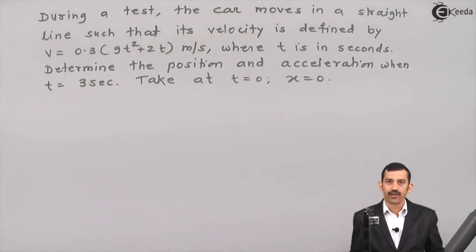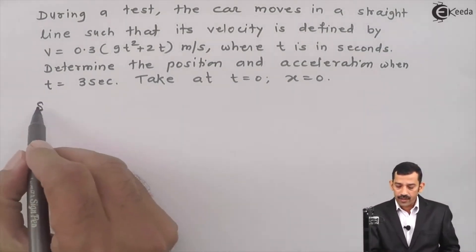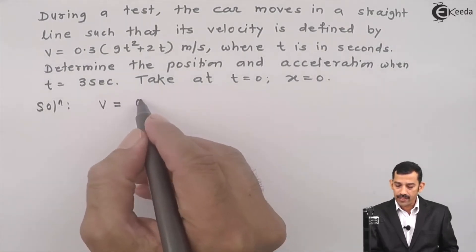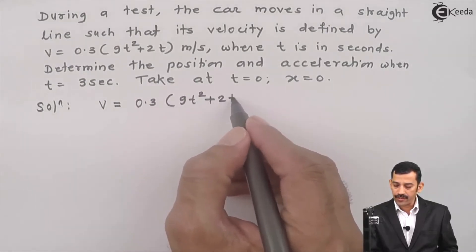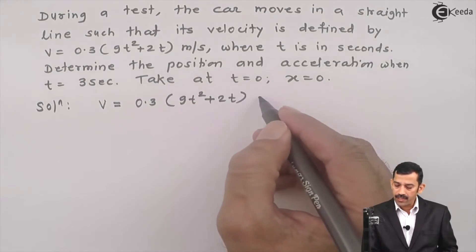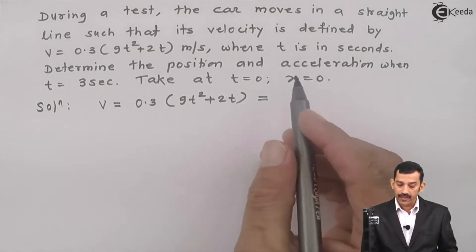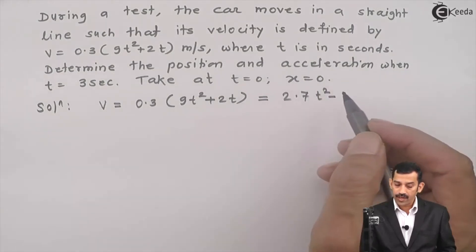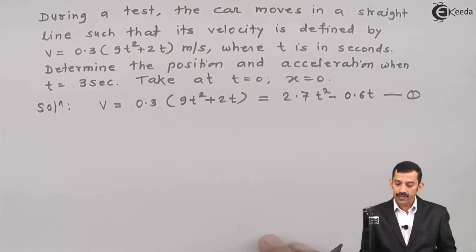The use of such boundary conditions is always to find out the constant of integration. The equation of velocity is given as v = 0.3(9t² + 2t). Multiplying through by 0.3, we get: 0.3 × 9 = 2.7t², and 0.3 × 2 = 0.6t. So v = 2.7t² − 0.6t. Call this Equation 1.